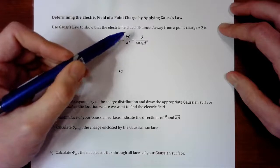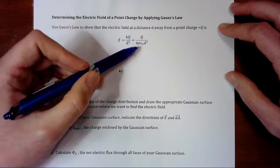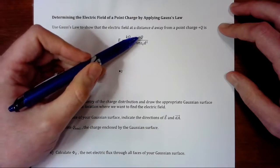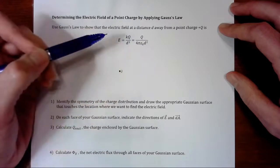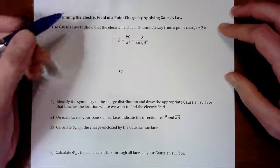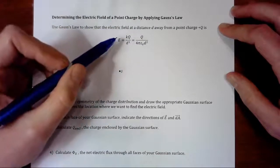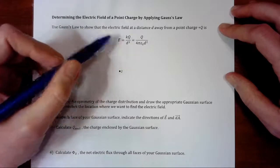Remember that k is the same as 1 over 4π epsilon naught, so we could also write it as q over 4π epsilon naught d squared. So we're going to derive this equation, Coulomb's law, from Gauss's law.